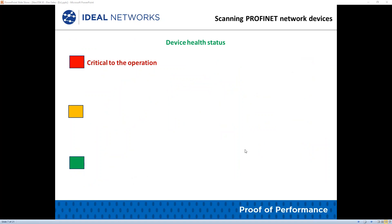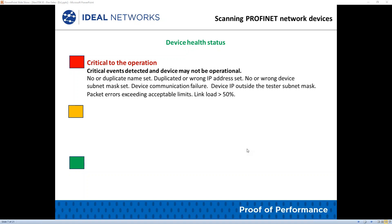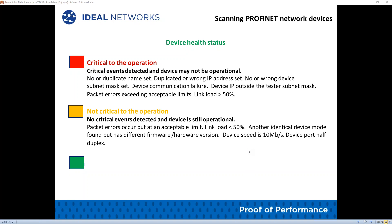Scanning the Profinet network devices uses auto detection and a device status indication of network health via a traffic light model. Red indicates critical to the operation — a critical event has been detected and the device may not be operational. Yellow indicates not critical to the operation — no critical event detected and the device is still operational. Green indicates operation is normal — no abnormal event is detected.